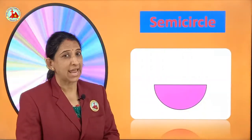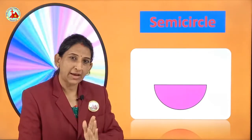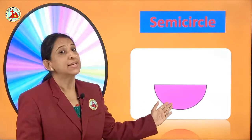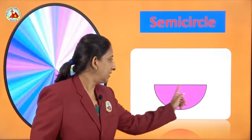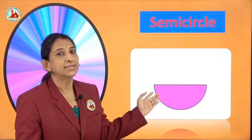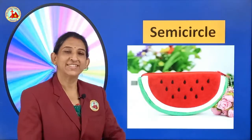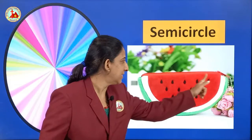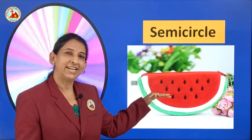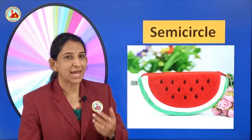This is a semicircle. A circle is complete and half a circle is called semicircle. One side is a straight line, another side is a curve — this is called semicircle. Watermelon — we cut it in a semicircle and eat it. This is which shape? Repeat after me — semicircle.